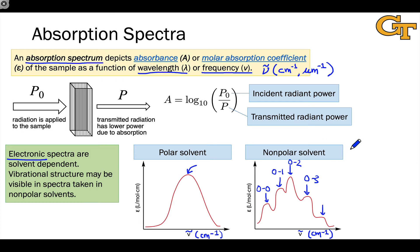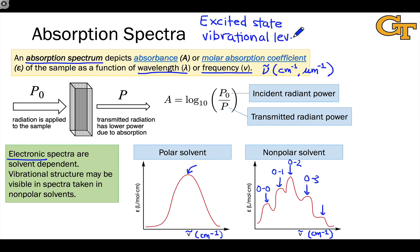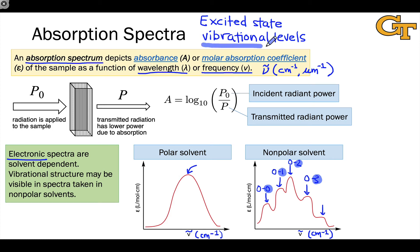When you see vibrational structure, absorption spectra give you information about the excited state vibrational levels. This is an important distinction from emission spectroscopy. When we excite a sample in an absorption experiment, we do so from the ground vibrational level of the ground state up to the various levels of the excited state. The various transitions observed in the spectrum differ in the excited state vibrational level. If you see vibrational structure in an absorption spectrum, it corresponds to the excited state vibrational levels, not the ground state levels.